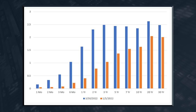Those at the short end of the curve, particularly the mid-range — in other words, from one, two, three, and five year — those have risen much more than longer-term yields, particularly the 10-year, 20, and 30.